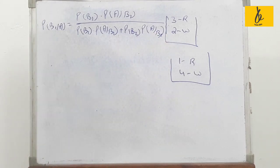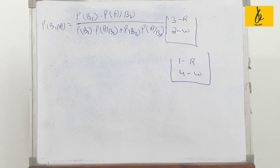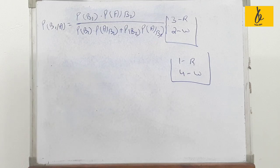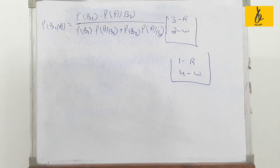Now we'll apply Bayes' theorem. We'll use the Bayes theorem equation for B1 and B2. What are the values of B1 and B2? Let's write them out.